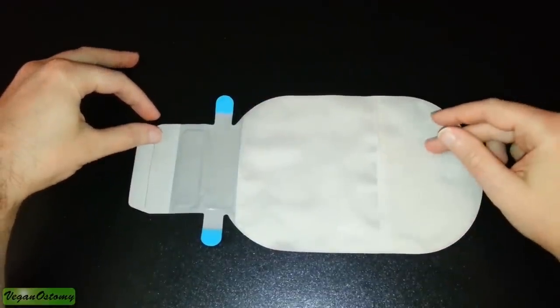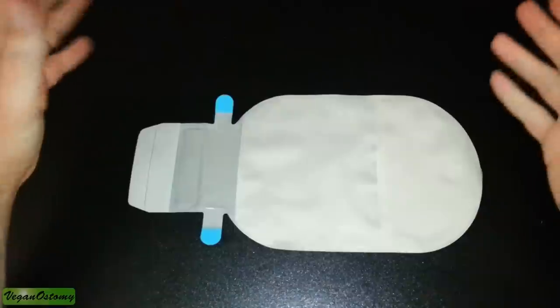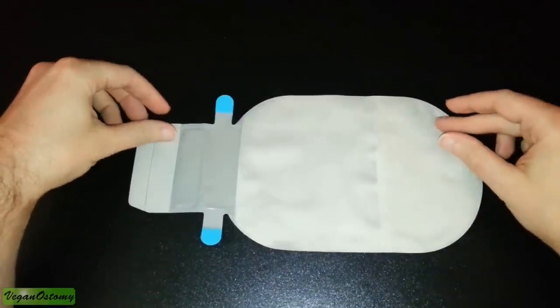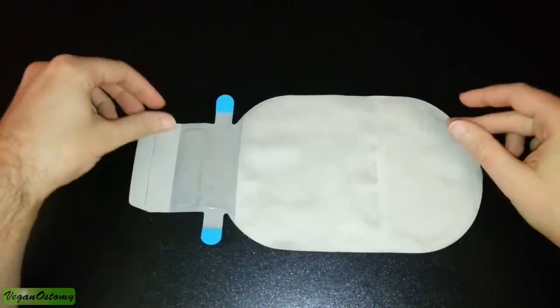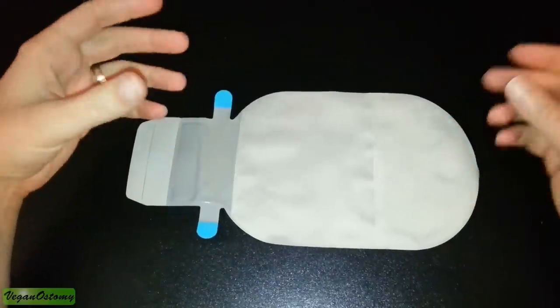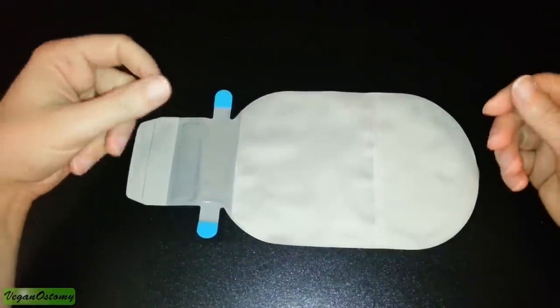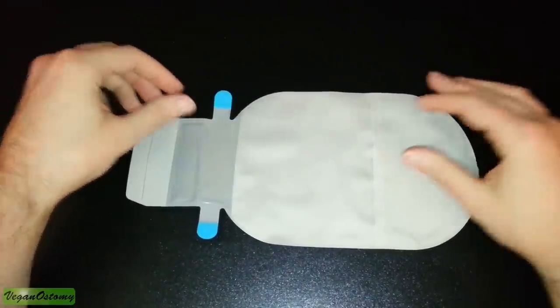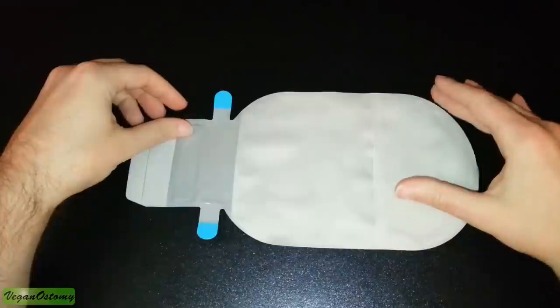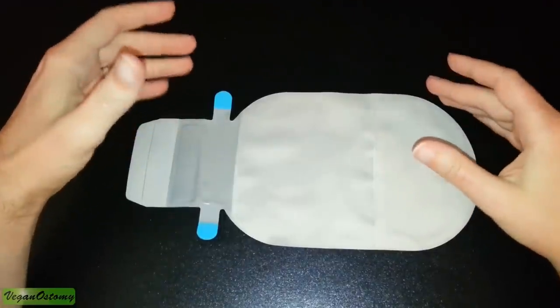Most of you, if you're wearing a Coloplast product or pretty much any other product out there, you'll notice that it has either a pinkish skin tone or a slightly yellowish type of color to it. This one happens to be a nice neutral gray and it actually looks very nice in person.